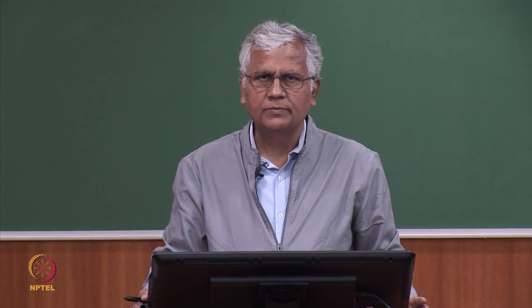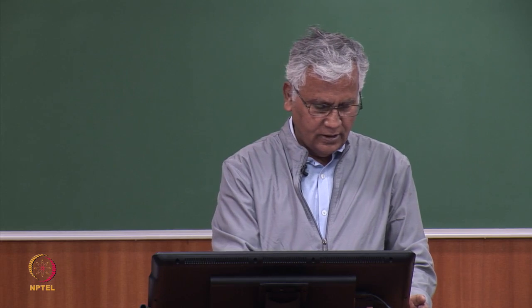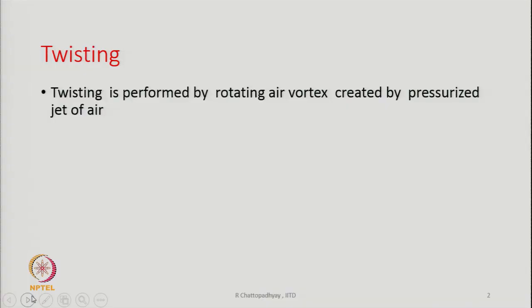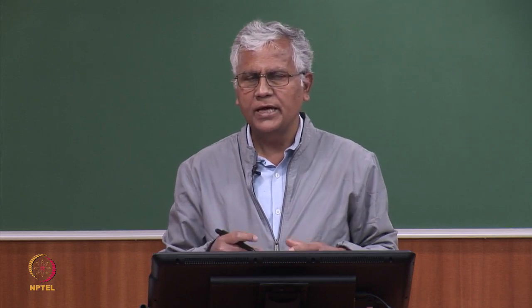Today we are going to discuss the yarn formation mechanism in air jet spinning. Yarn formation basically means some kind of twisting arrangement has to be there — there has to be a twister. Here, the twisting is performed by a rotating air vortex, and this vortex is created by a pressurized jet of air, hence the name air jet spinning.